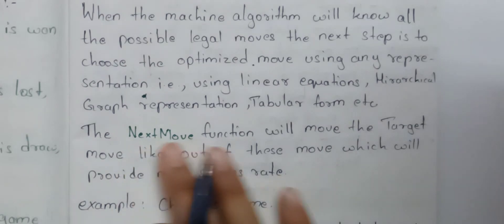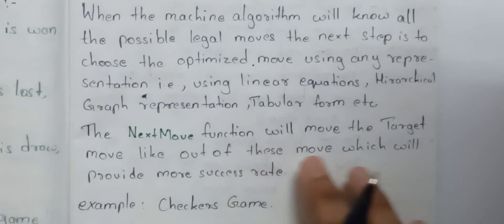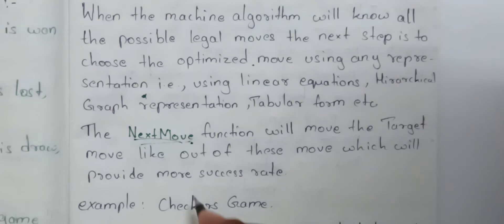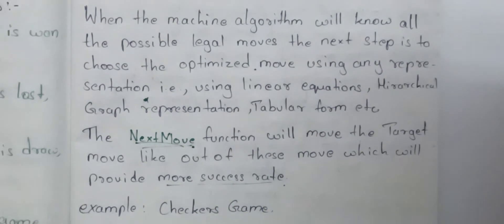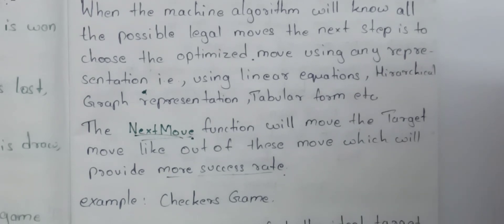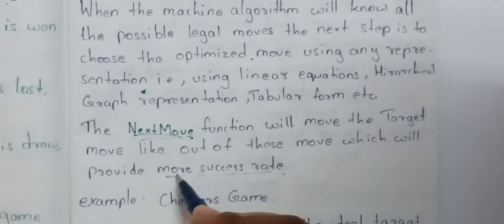The next move function will target the move that provides the more success rate. We can use direct experience or indirect experience. We can use the ideal target function, and next time we select the move that indirectly gives us more success rate.